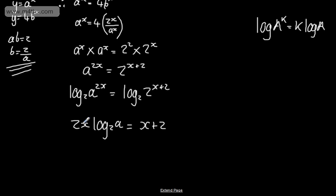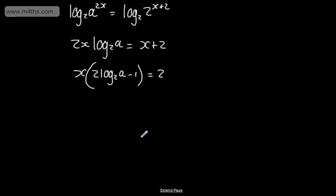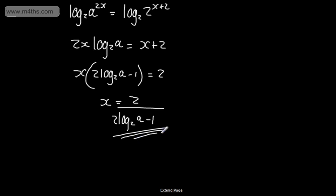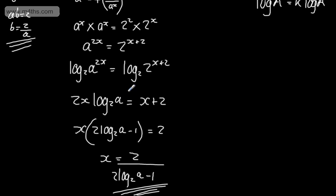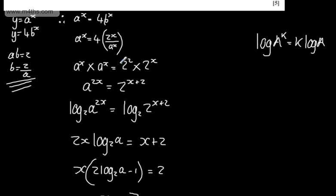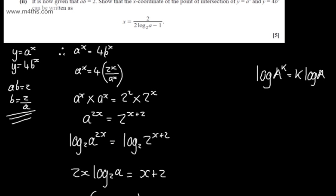I now have to make x the subject. I've got 2x log base 2 of a on the left and x on the right. Factoring out x gives x times (2 log base 2 of a minus 1) equals 2. Dividing through by the bracket: x equals 2 over (2 log base 2 of a minus 1), as required. That is one of the many ways you can do that question, and as long as you've shown it with a legitimate approach, you will be given the 5 marks.